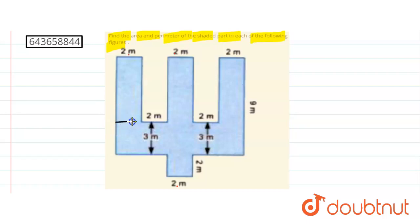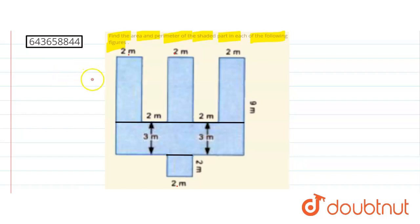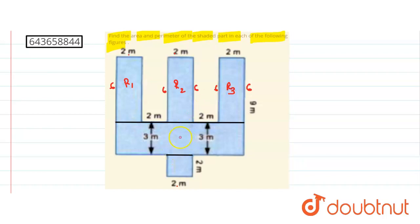To find the area of this region, we divide it into sub-parts so that it is easy to calculate. This is 6 centimeters because the total is 9, so this is 3, and 9 minus 3 is 6. The other sides are also 6. We divide this into sub-regions: R1, R2, R3, R4, and R5.